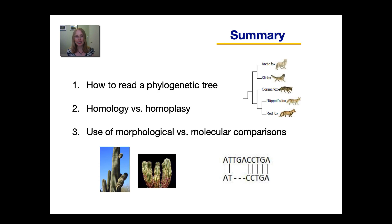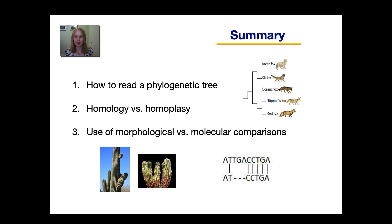So finally, let's do a summary of what we discussed. You learned how to read or interpret a phylogenetic tree. We discussed what a homology versus a homoplasy is, and that it is very crucial to be able to distinguish these because only homologies are useful for creating phylogenetic trees. And then we discussed the use of morphological versus molecular comparisons that will help us begin creating phylogenetic trees.